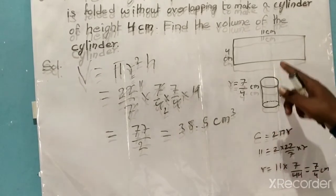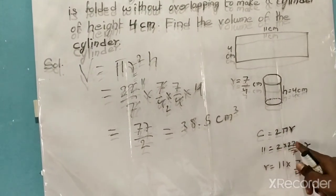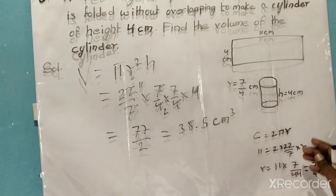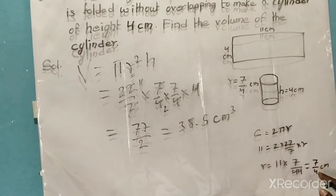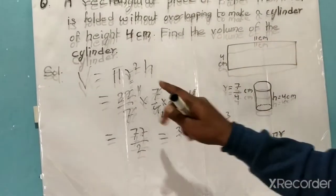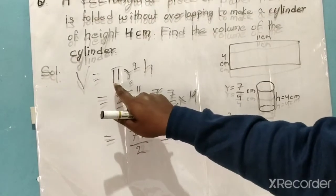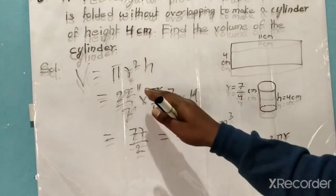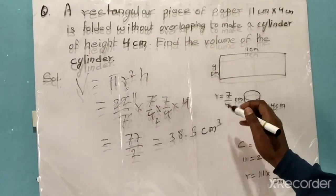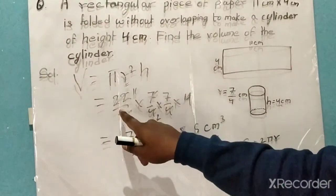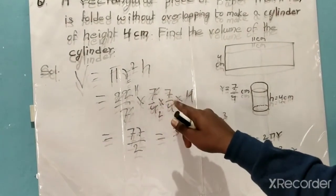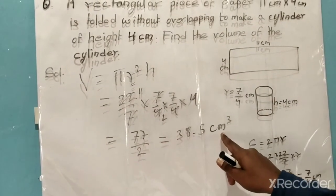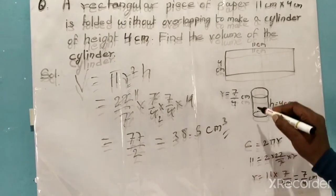First we find the radius: circumference equals 2πr, so 11 equals 22/7 into r, giving r equals 7/4 centimeter. Then to find the volume, V equals πr²h: substituting 22/7 into (7/4)² into 4, we get 38.5 centimeter cube. This is the volume of the cylinder.